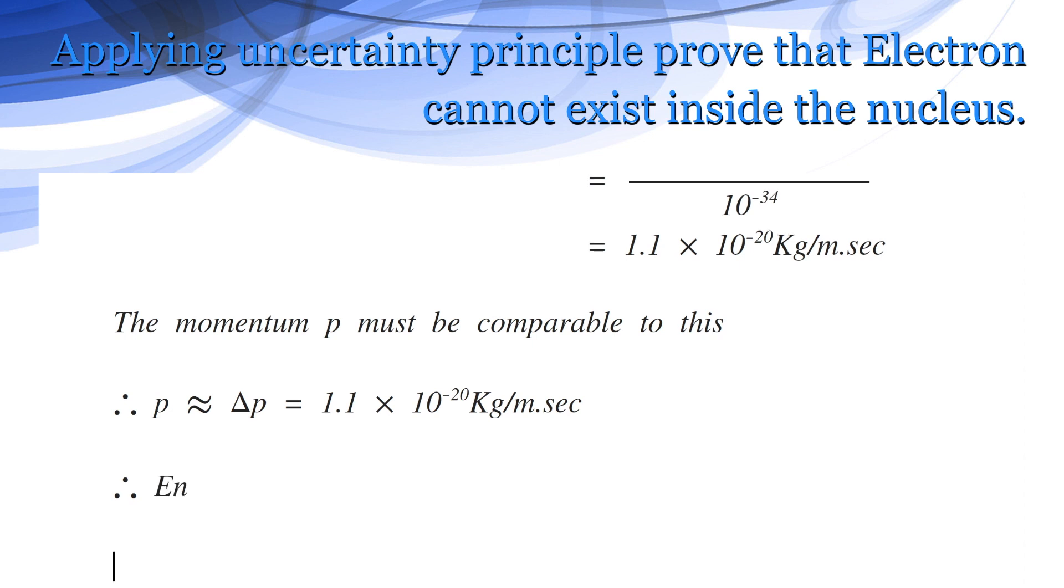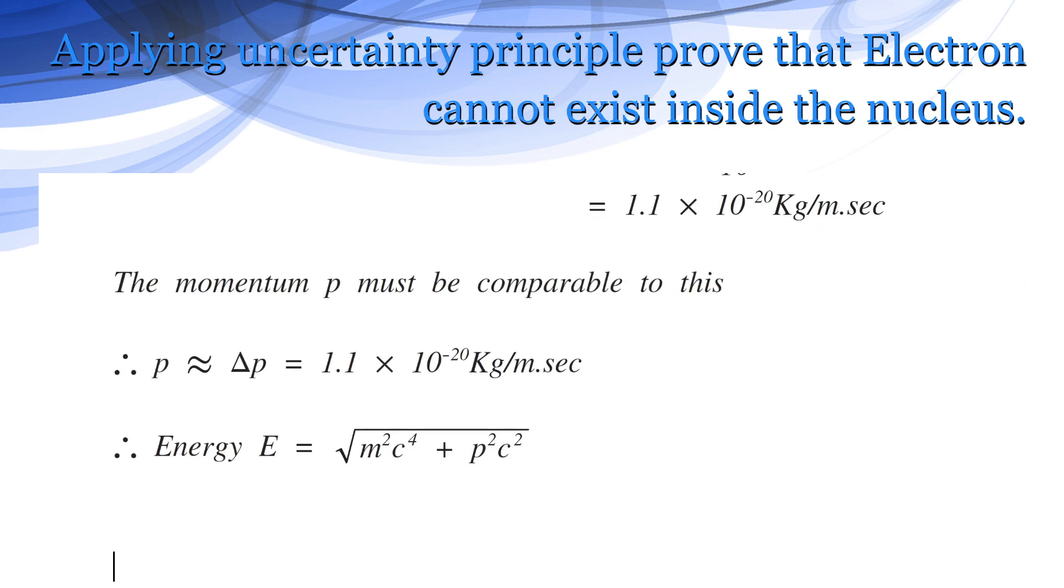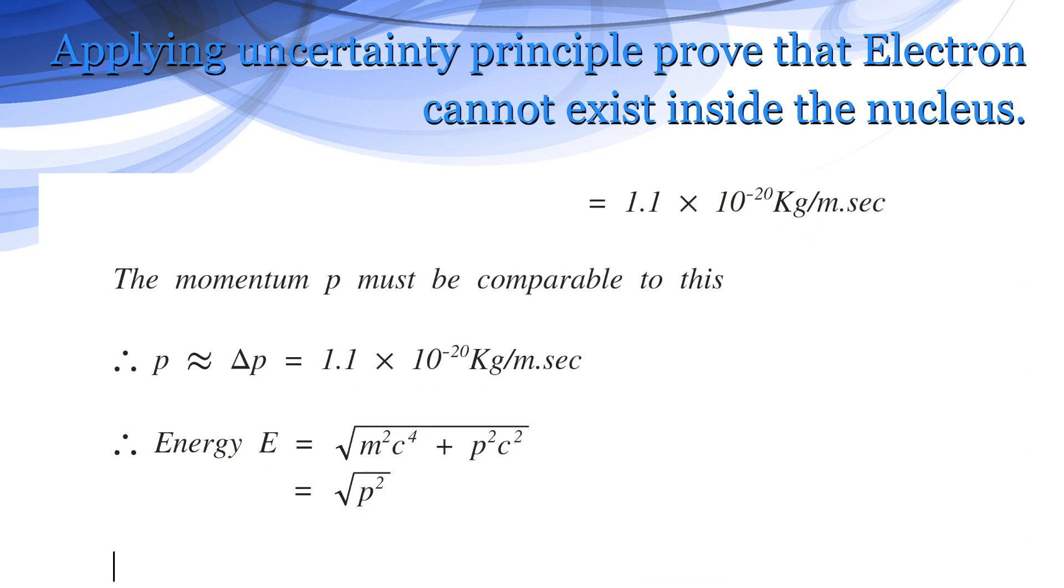Therefore, energy E is given by square root of m square c to the power 4 plus p square into c square. As the mass of the electron is very small, we can neglect the first factor.